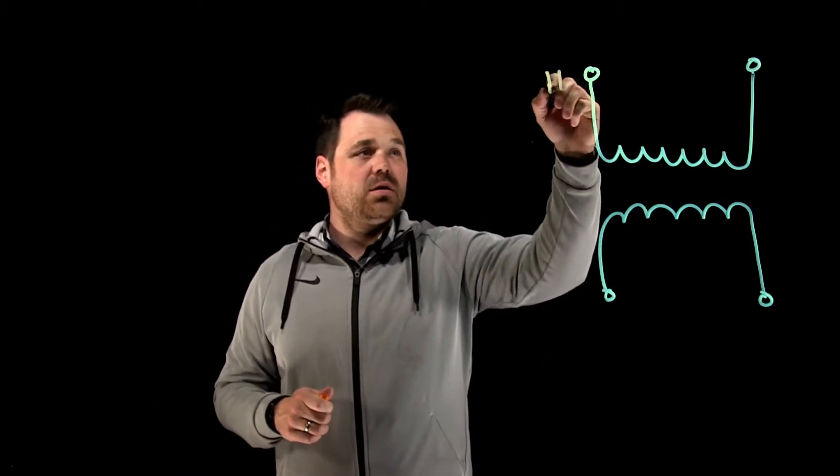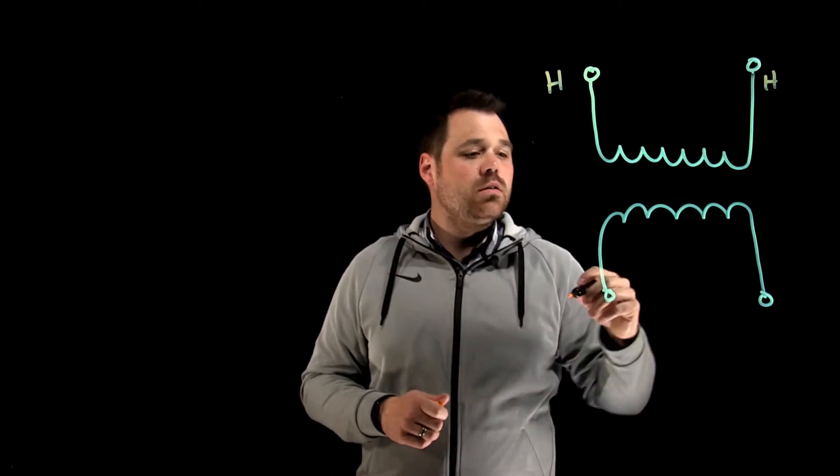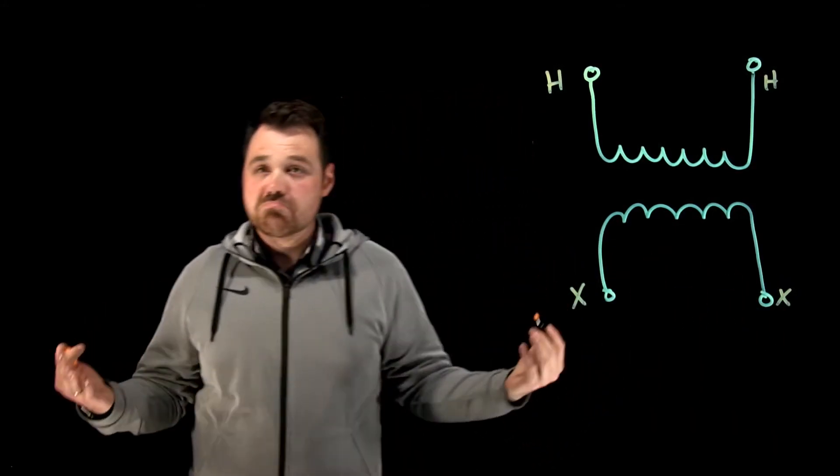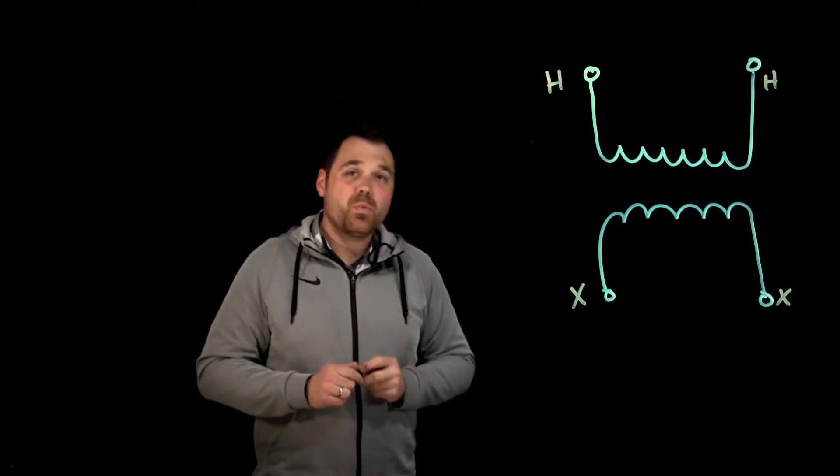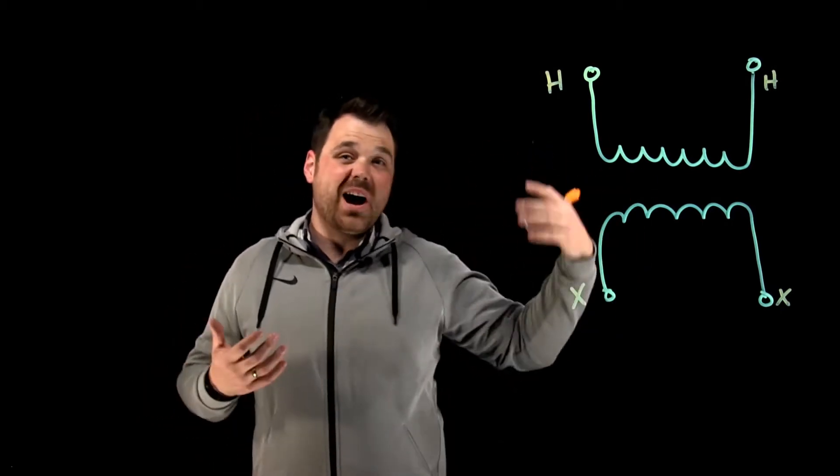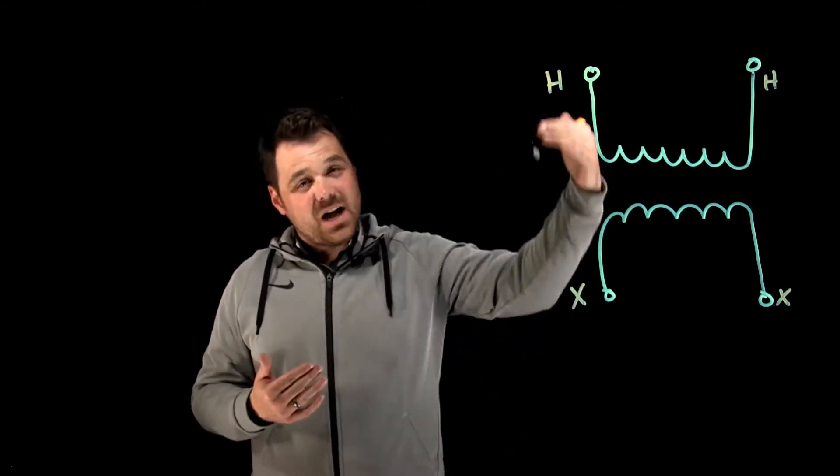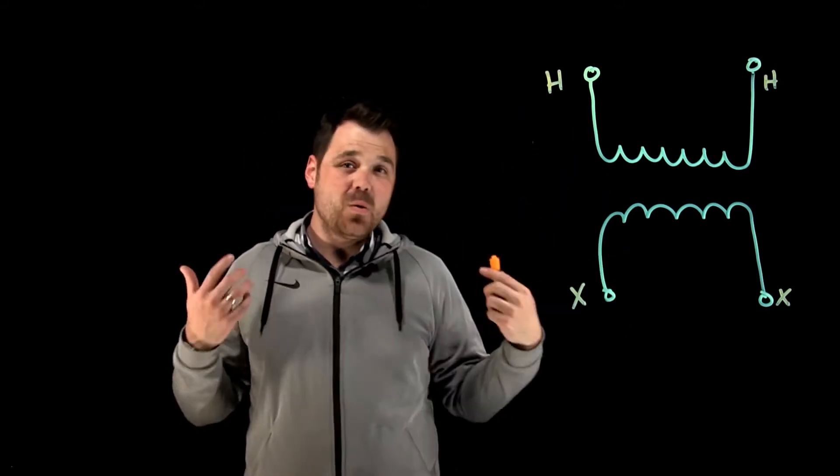One of the windings is going to be labeled with H's. The other winding is going to be labeled with X's. What does that mean? The H winding will have a higher voltage rating than the X winding. The X winding is a lower voltage rating.